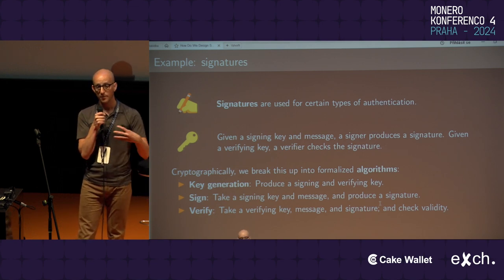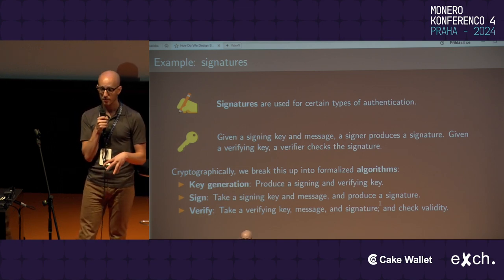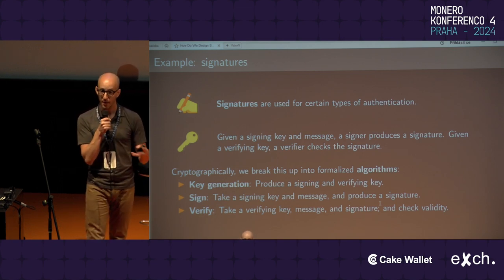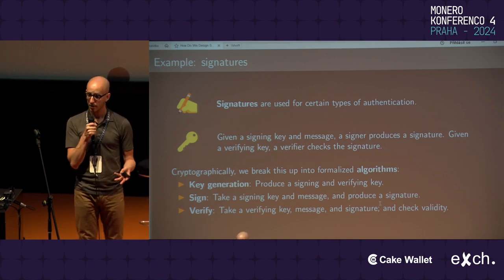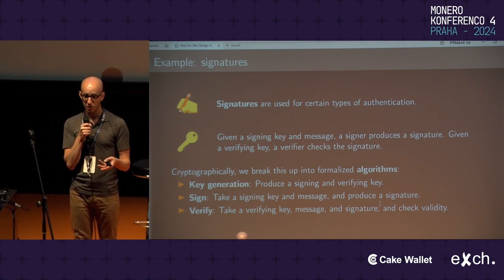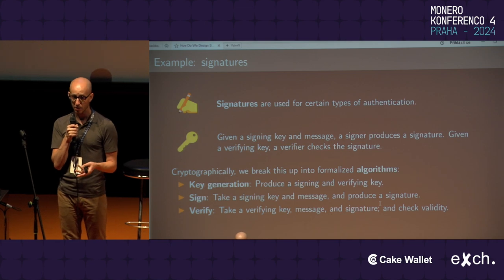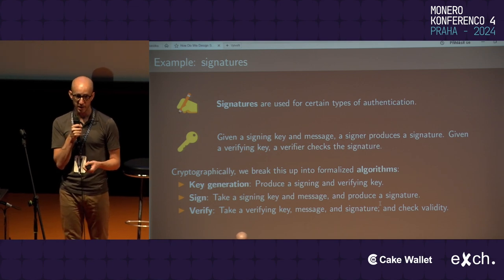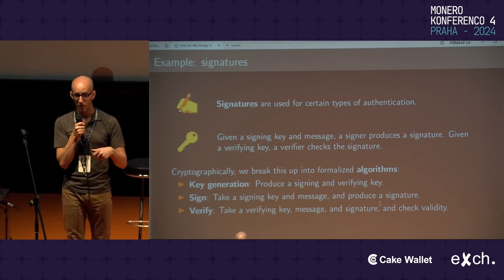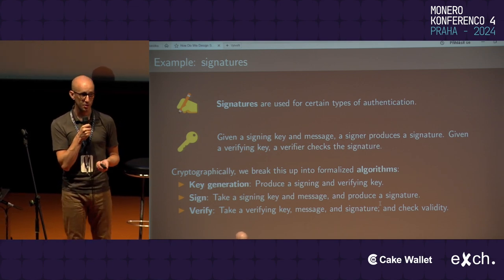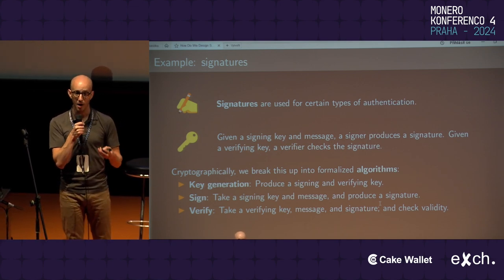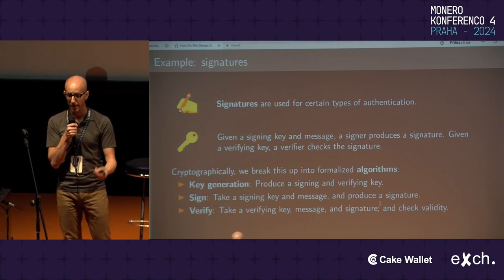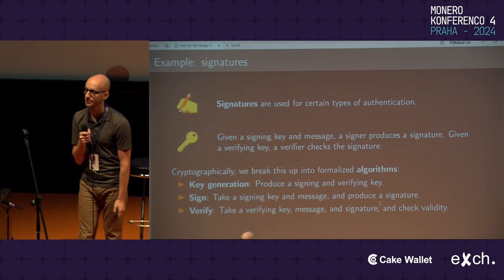We have a signing algorithm, which takes a signing key and the message that I want to sign, and it spits out a signature using whatever math or cryptography the different schemes specify. And there's a corresponding verify algorithm that takes the verifying key, the message, and the signature, and outputs a yes or no — whether that signature is valid on that message for that key.